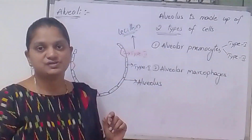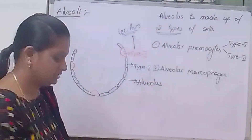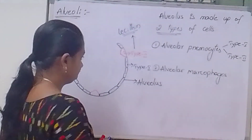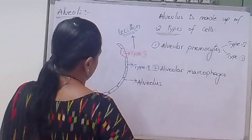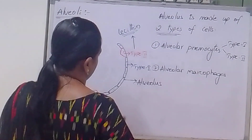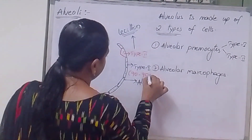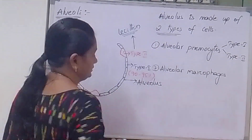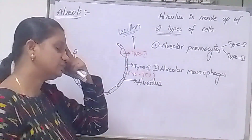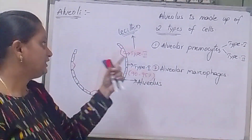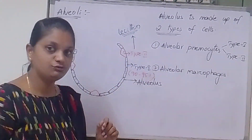90 to 95% of the alveolar surface area is occupied by Type 1 pneumocytes. The remaining 5 to 10% is occupied by Type 2 pneumocytes.